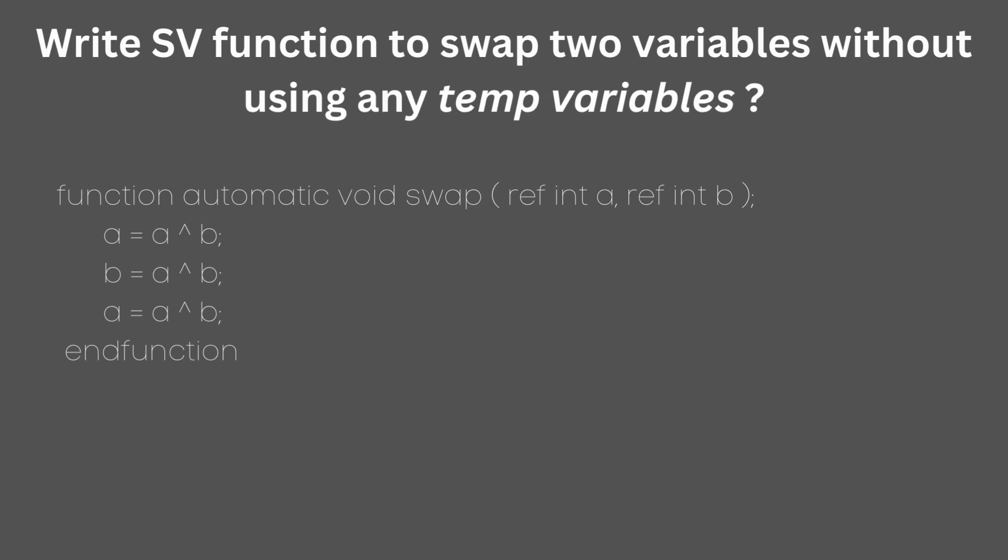The swap function is implemented in this example by applying XOR or exclusive or operators. This is done three times to the two variables. This is gonna produce the same result as the previous example.